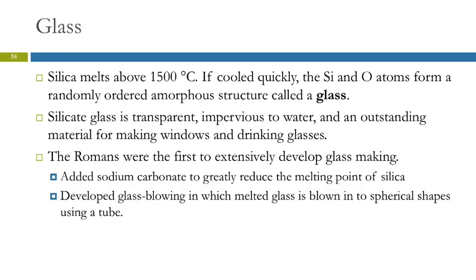Another substance to discuss is glass. Silica will melt above about 1500 degrees, and if you cool it quickly you get an amorphous structure known as glass. If you cool it slowly you may end up with something like a ceramic, but if you cool it quickly you'll get glass. Silicate glass is transparent.